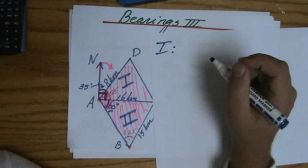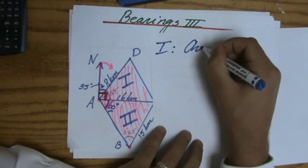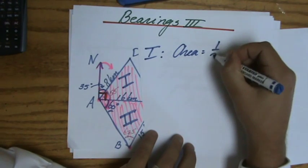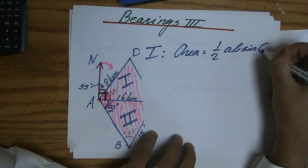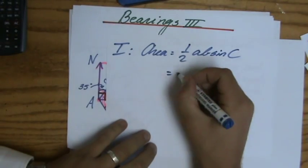Well, the area of the triangle, we know is base times height divided by 2, but we have also learned that it's a half AB sine of C, capital C. Make sure you've seen my previous videos. Everything comes together in this bearings question, beautiful question.